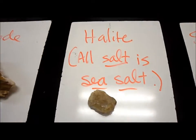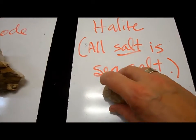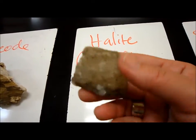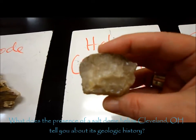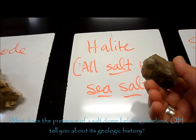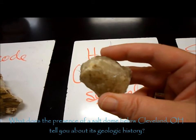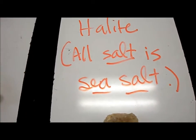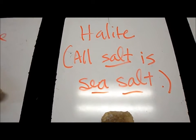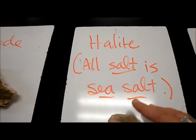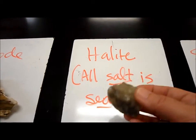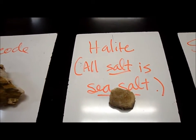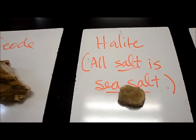Here is another sedimentary rock called halite. It looks kind of shiny. I want you to imagine if I took this and ground it up really, really fine and put it in a salt shaker — because halite is salt. And if you could taste it, you would know, wow, that's salt. By the way, all salt is sea salt. They say this salt is better for you because it's sea salt, but if you don't have an ocean, then you don't have salt. Think about what Rachel Carson said in that opening chapter about the salts washing into the ocean.